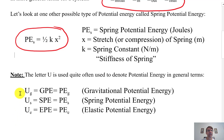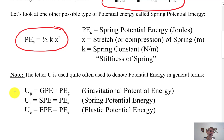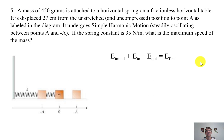Some notation guidelines: in many books, the capital letter U is used for general potential energy. U sub g is GPE — gravitational potential energy — which is what we've been using (our book uses PE sub g, but they all mean the same thing). Then U sub s is spring potential energy, or PE sub s. Our book prefers the PE sub notation. Capital U will be used in many textbooks, so it's useful to recognize.